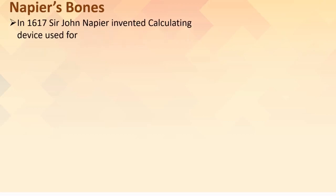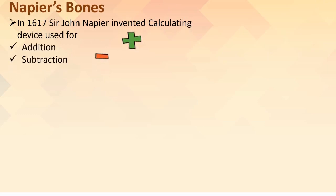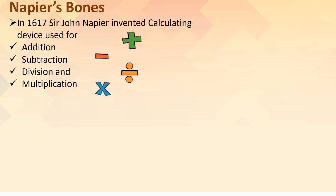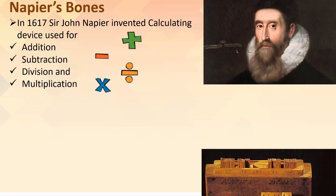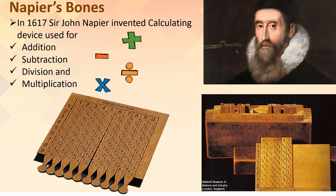Napier's Bones. Sir John Napier invented this device in 1617. It was used for simple calculations like addition, subtraction, multiplication and division. This device had a set of rods or bones with multiplication tables inscribed on them.